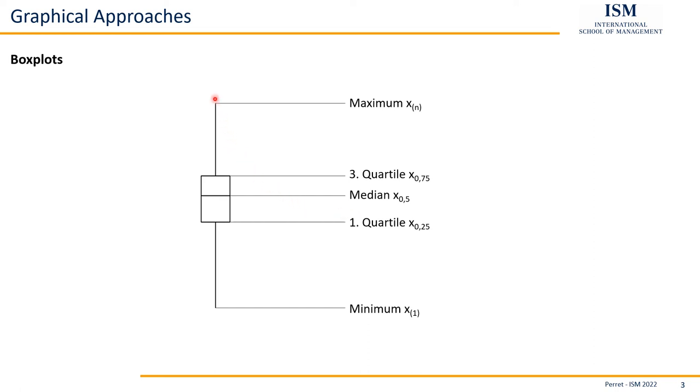The second approach does not have the maximum up here, the minimum down here. Instead, it takes the distance between median and third quartile and puts this like two, two and a half or three times up here. Says this is the upper whisker. Does the same thing by taking the distance between median and first quartile. Goes like one, two and a half or three times or two times down here and calls this the lower whisker.